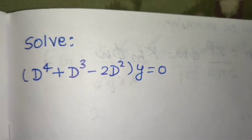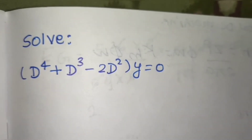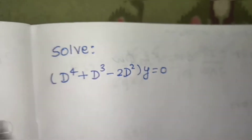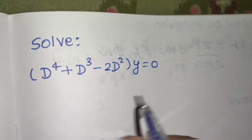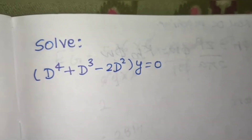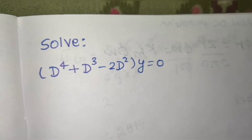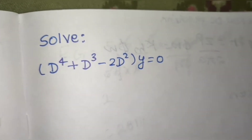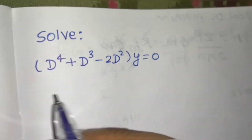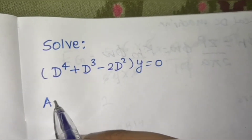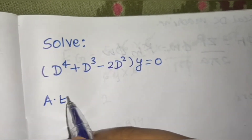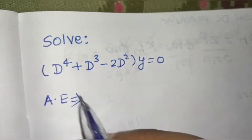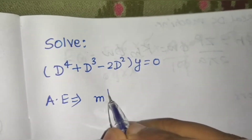Let's solve a question from linear differential equations with constant coefficients. Since the RHS is 0, the particular integral is 0, so we just have to find the complementary function. For that, we write the auxiliary equation by replacing D with m.